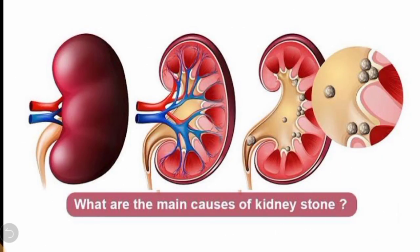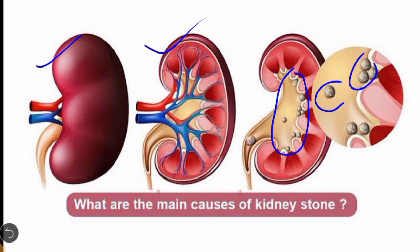یہ kidney کا structure ہے اور اس structure کے اندر آپ کو چھوٹے چھوٹے rounded structures نظر آ رہے ہیں — یہ stones ہیں۔ یہ بہت چھوٹے ہوتے ہیں، جوار یا باجرے سے بھی تھوڑے چھوٹے، یا کبھی کبھی اس سے بھی بڑے ہو سکتے ہیں۔ Kidney stone ہوتا کس وجہ سے ہے؟ What are the main causes of kidney stone?